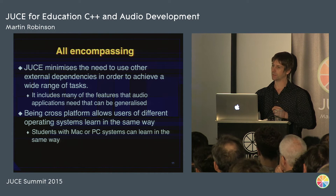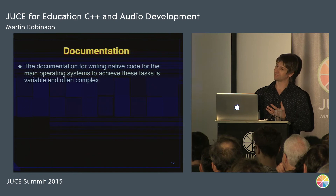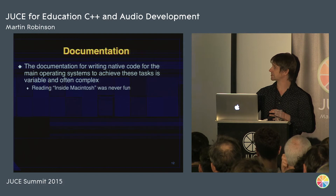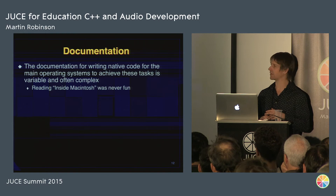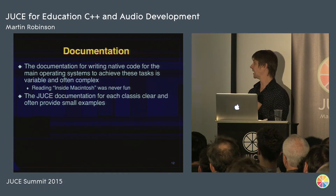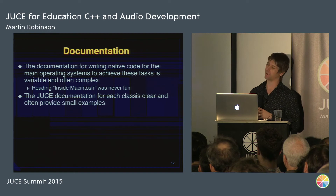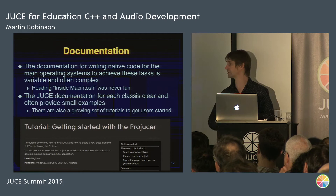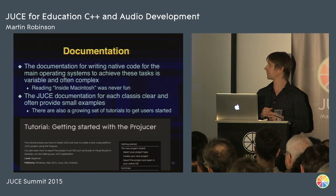That might seem trivial but it's quite important that students don't necessarily have to come into the lab to learn — they might want to learn at home at 4 o'clock in the morning. Then we've got the documentation. Writing native code for main operating systems is often quite complex to read, certainly for newbies. The JUCE documentation for each class is clear, and often there's a small example if needed. The documentation is not bloated, and there's a growing set of tutorials on the website — introduction to the Producer, getting used to component classes, nesting components, and so on.